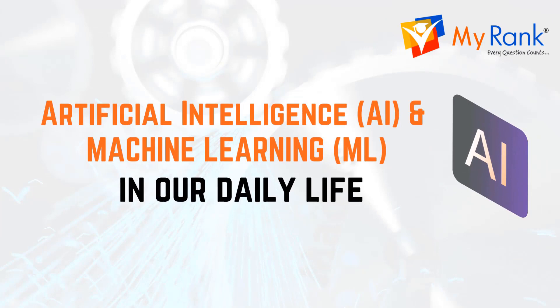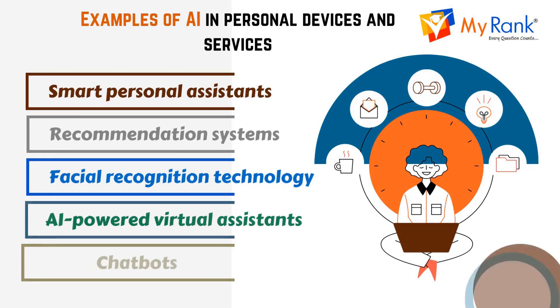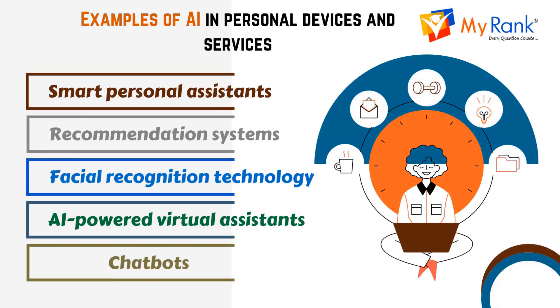AI and ML have a significant impact on our daily lives and we may not even be aware of it. Let's see some of the ways AI and ML are used in our daily life. Examples of AI in personal devices and services include smart personal assistants, recommendation systems, facial recognition technology, AI-powered virtual assistants, and chatbots.